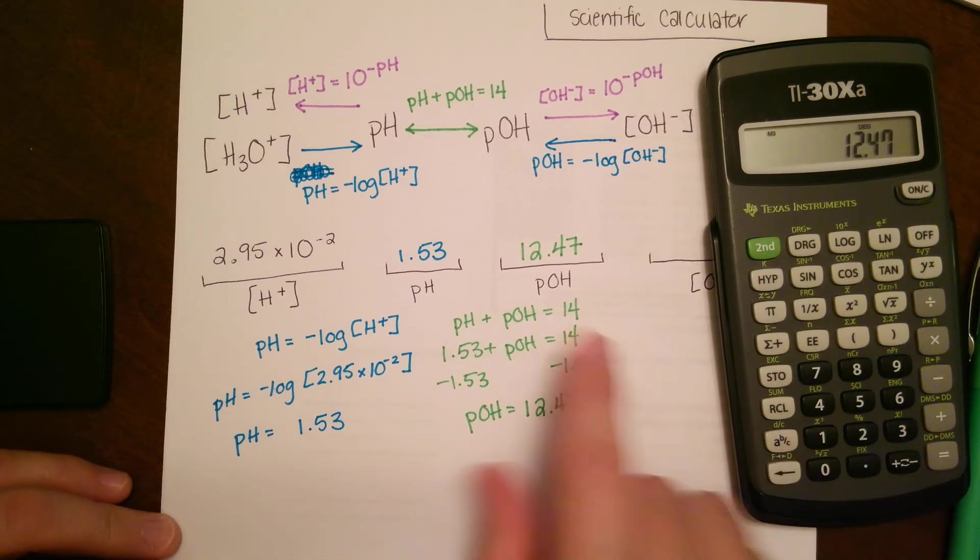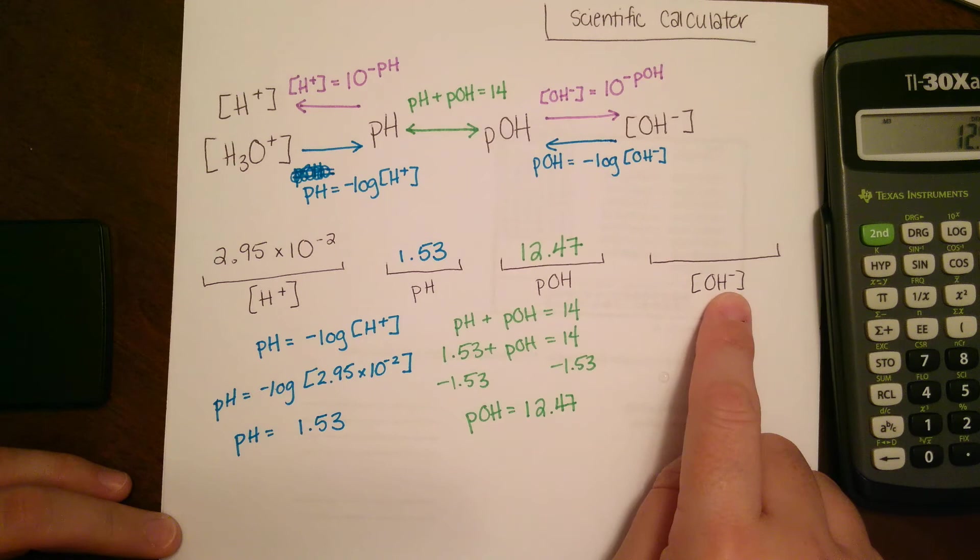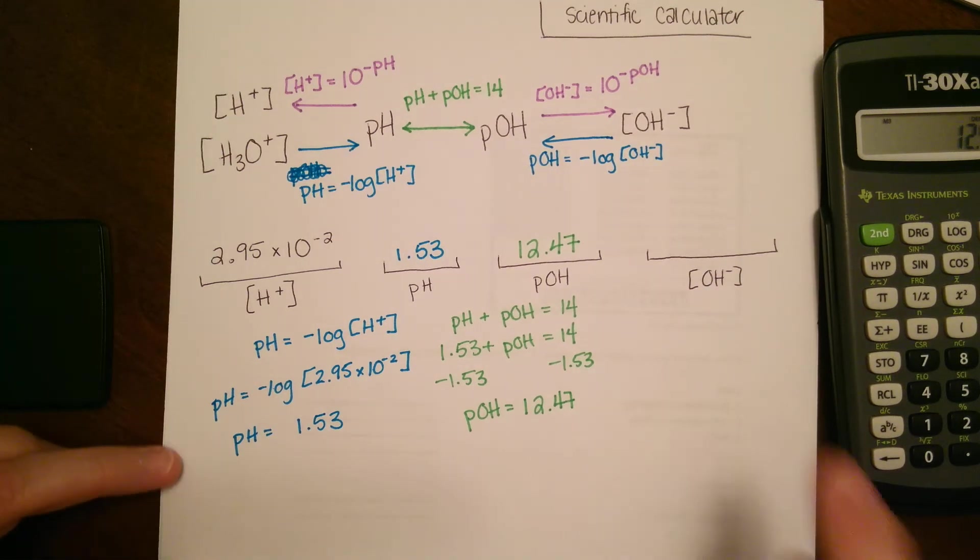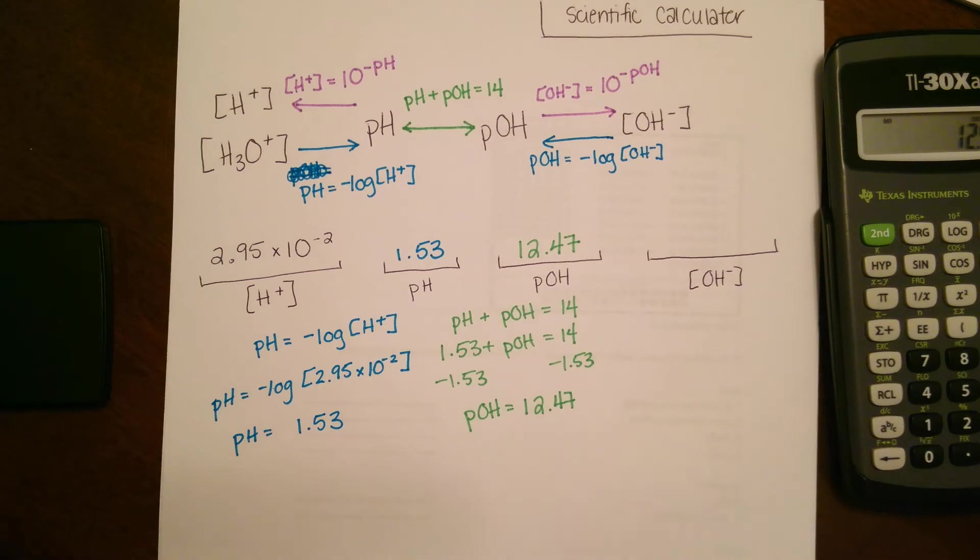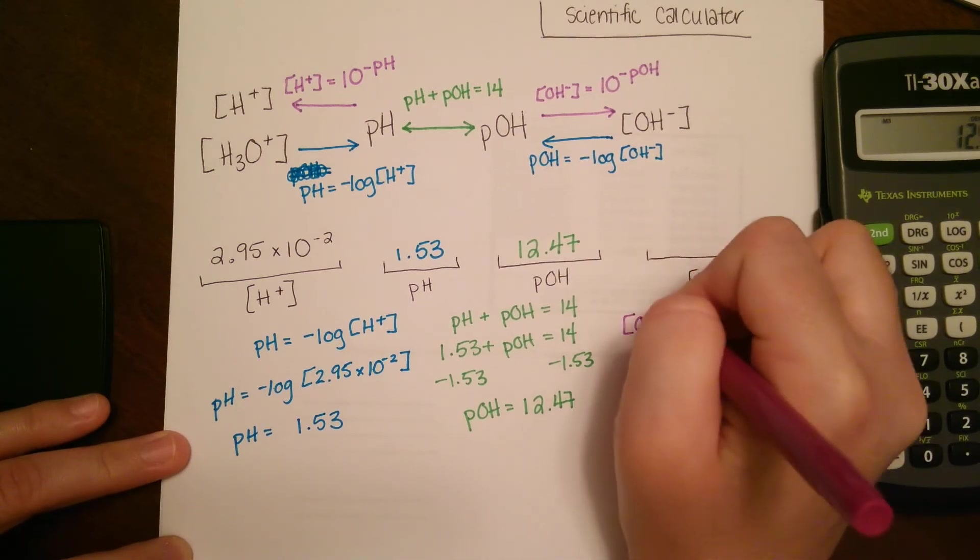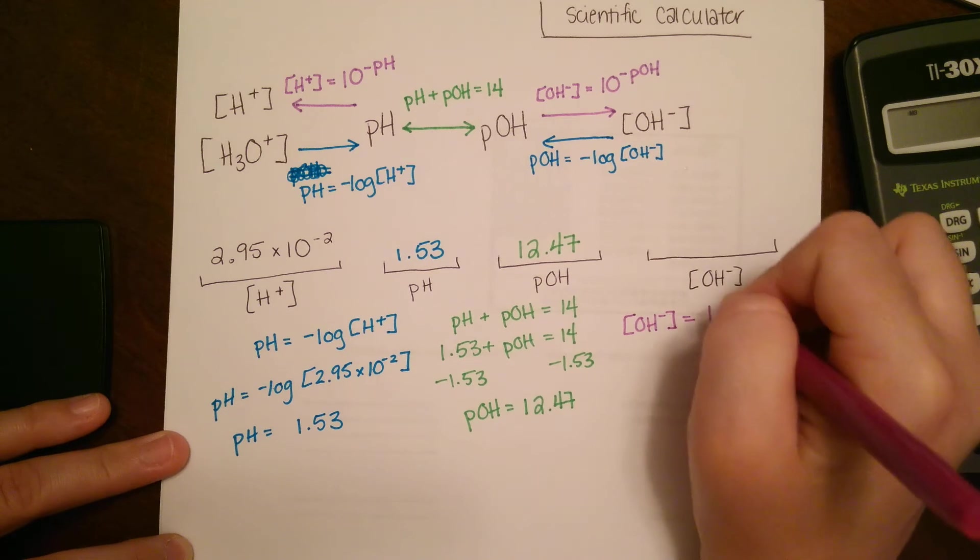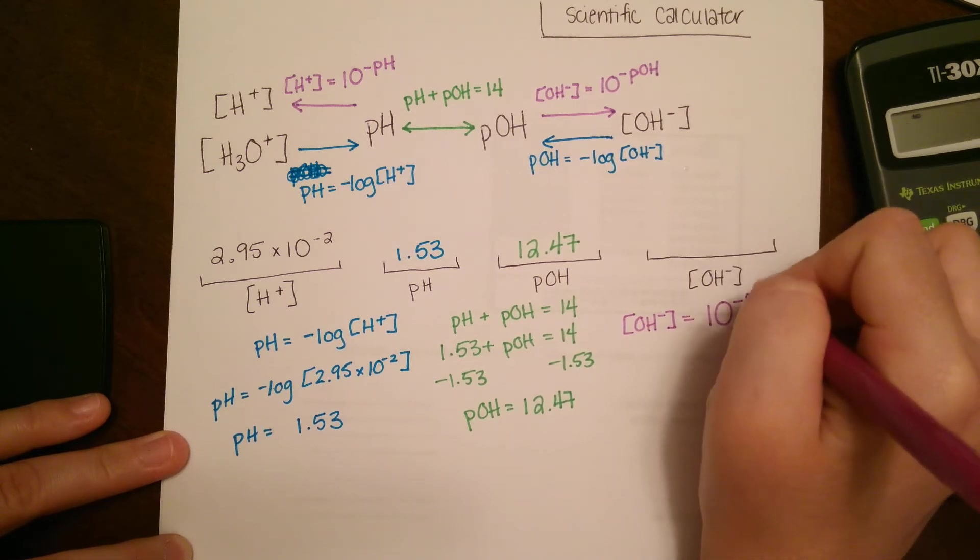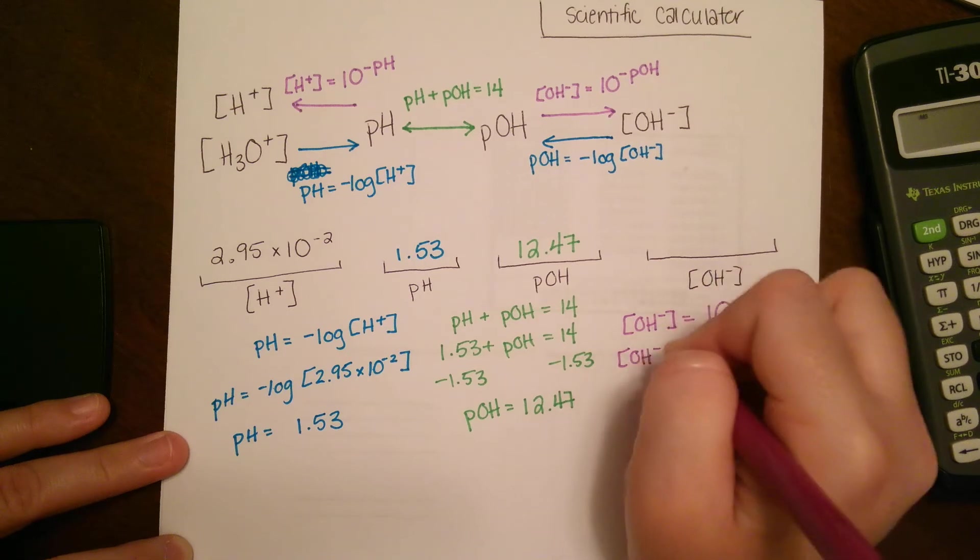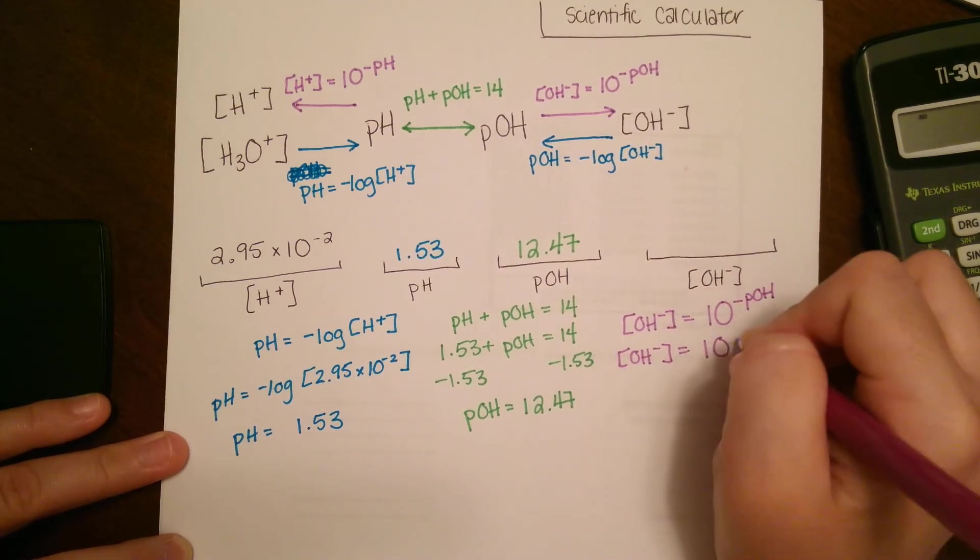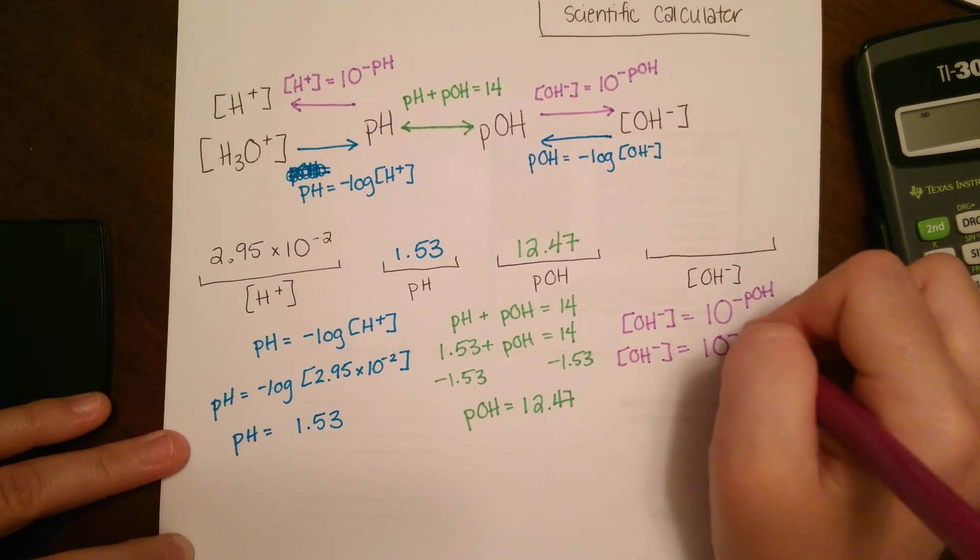Our final step, we're going to go from pOH to hydroxide concentration. We see the direction of the arrow. The equation we're going to use is hydroxide concentration = 10^(-pOH). We're going to plug that in: 10^(-12.47).